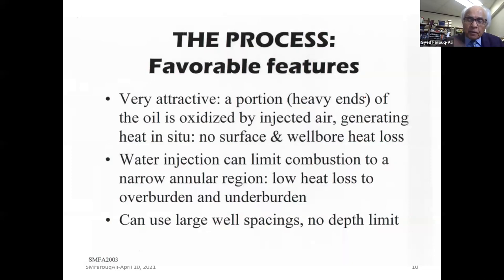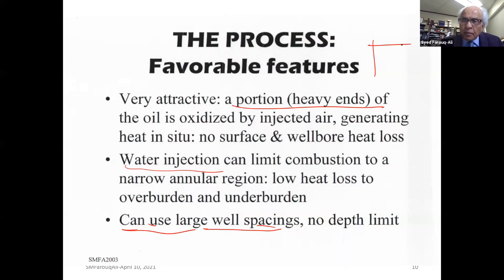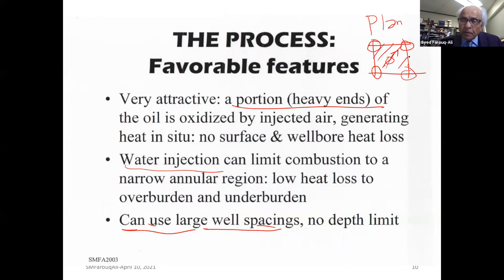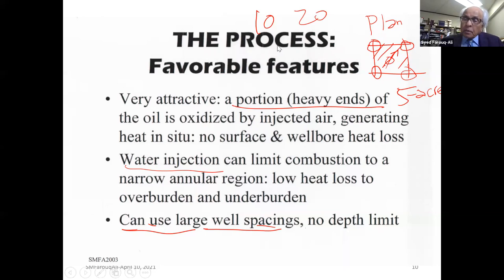Favorable features: a portion of the heavy oil is burned, we can inject water with air to control combustion, and most importantly, we can use very large well spacings. In a five-spot pattern, if you're doing steam injection, the pattern size is typically around five acres (two hectares). With in-situ combustion, you can have 10 or even 20 acres. That is one of the big attractive features of in-situ combustion.